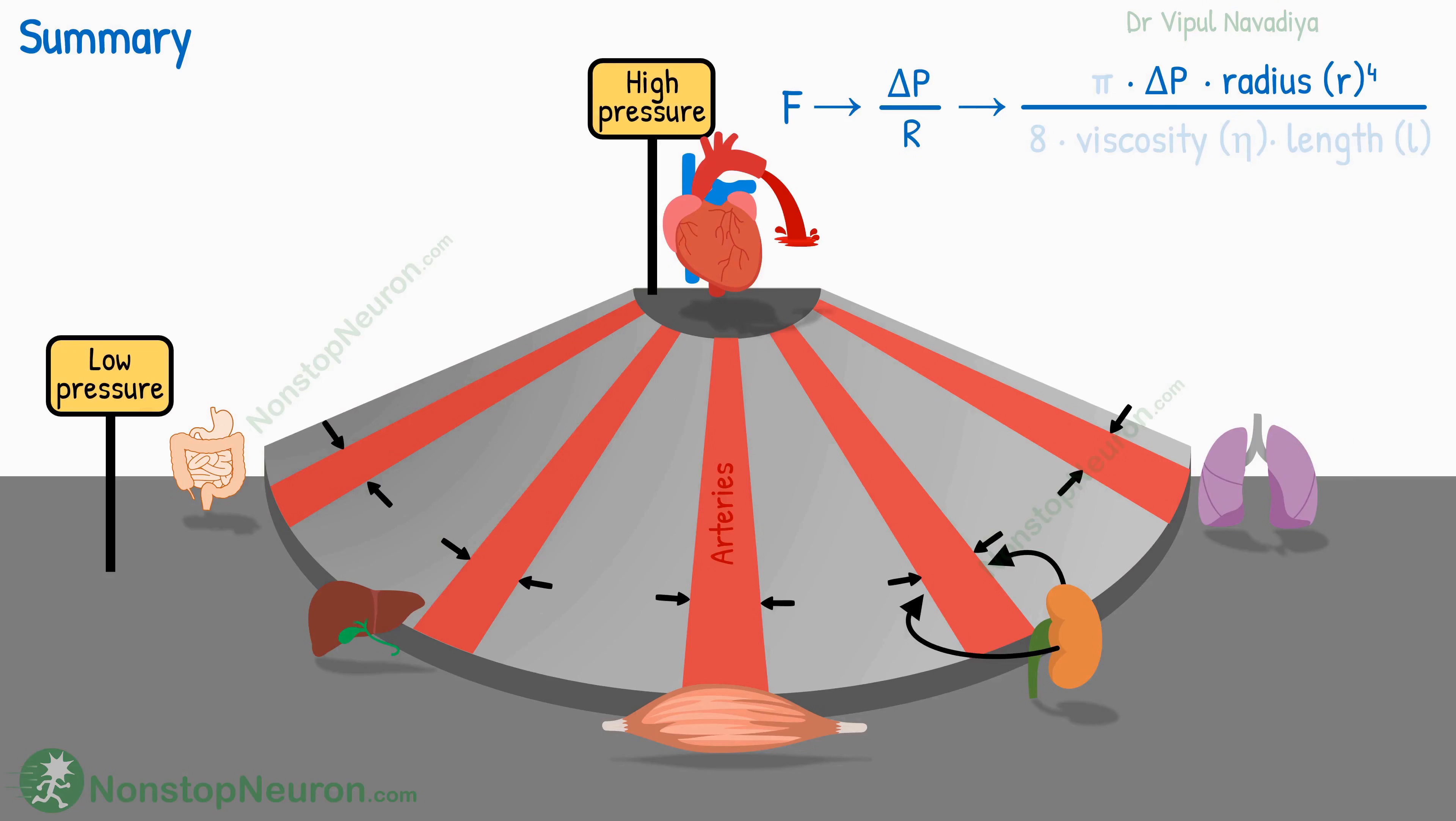Now let's have a quick summary. Blood flow is equal to the pressure gradient, divided by resistance. Resistance in turn depends on viscosity, length of blood vessel, and radius of the vessel.